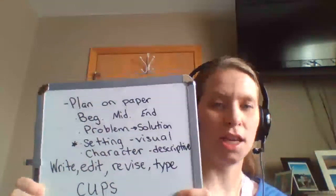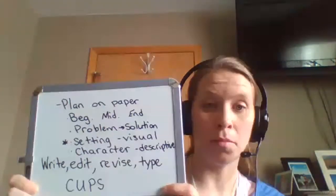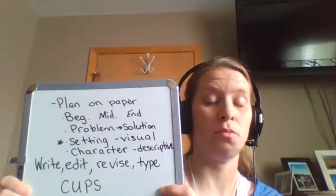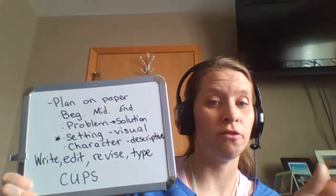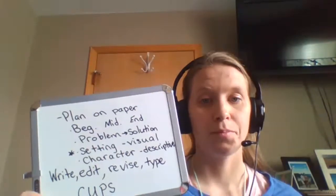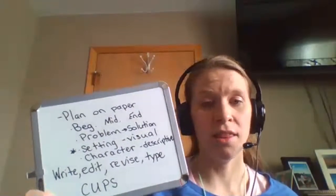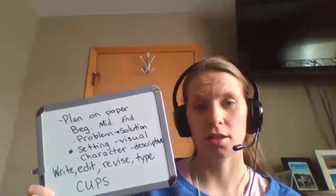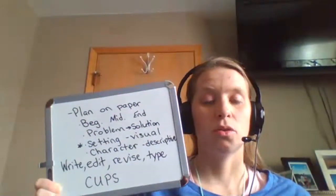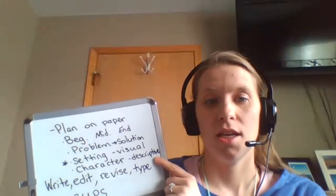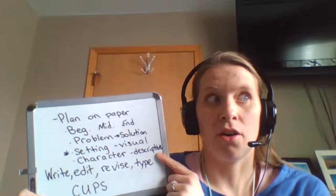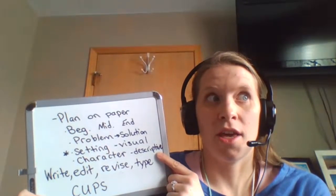First, I know you have that planning box sheet. Use your planning pages — like that bubble map — and in your story maybe you have a box and then the ending box.